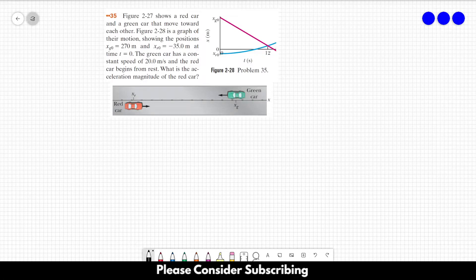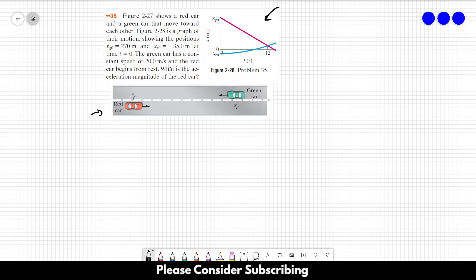Number 35. This figure over here shows a red card and a green card that moves toward each other. This figure over here is a graph of their motions showing their position.